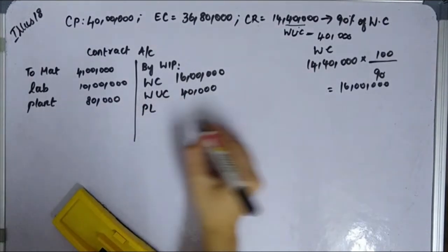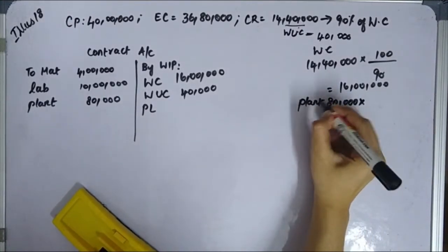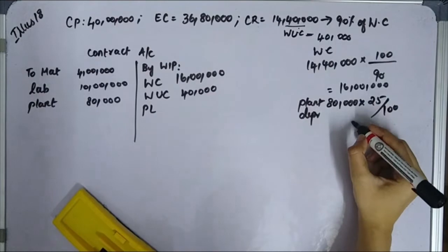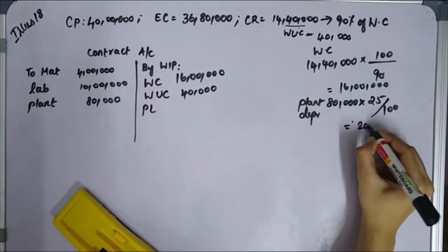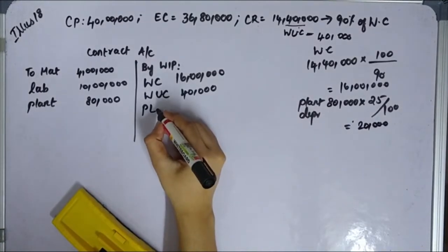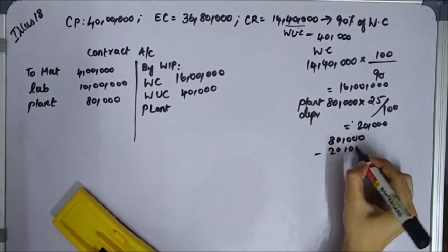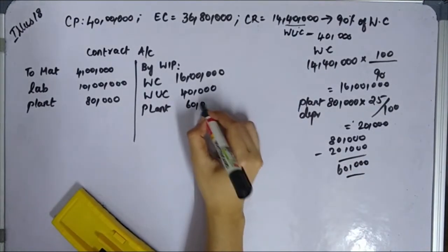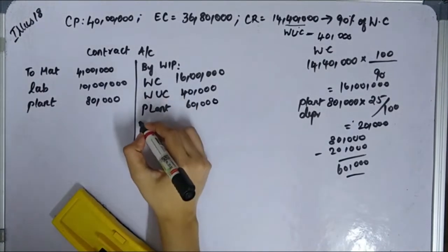For plant depreciation: plant value is 80,000 at 25% depreciation, so depreciation is 20,000 and the closing plant value is 60,000, which is credited. For materials damaged, material cost 20,000 is treated as an abnormal loss.